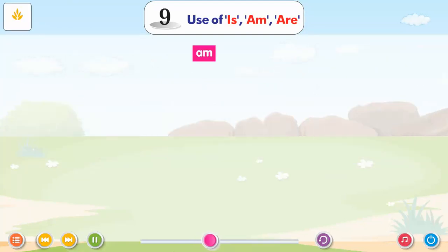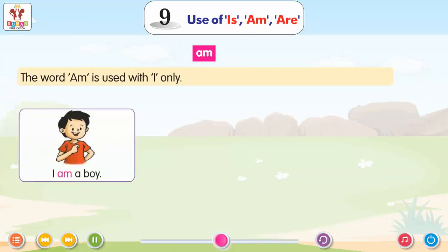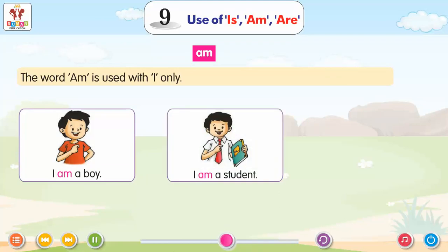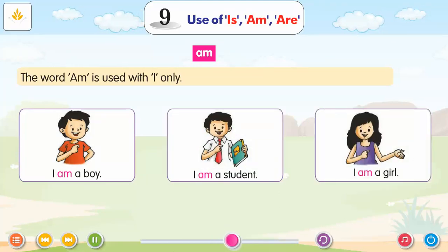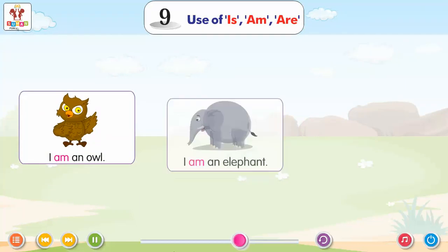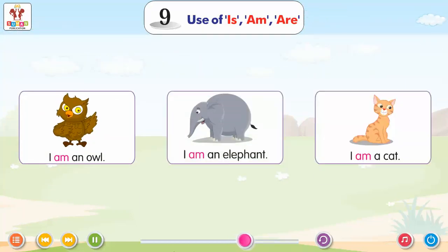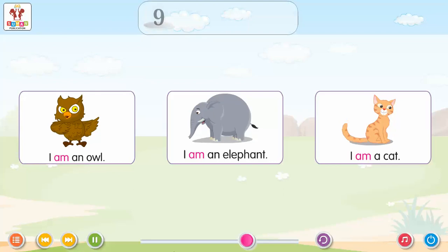The word 'Am' is used with 'I' only. I am a boy. I am a student. I am a girl. I am an owl. I am an elephant. I am a cat.